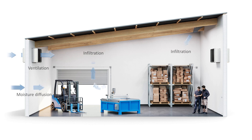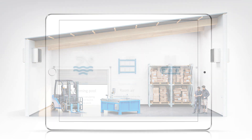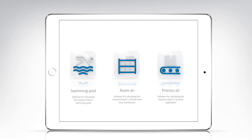Condair offers three specific humidity load calculators to meet the needs of different application areas: the humidity load calculator for swimming pools, the humidity load calculator for room air, and the humidity load calculator for process air.